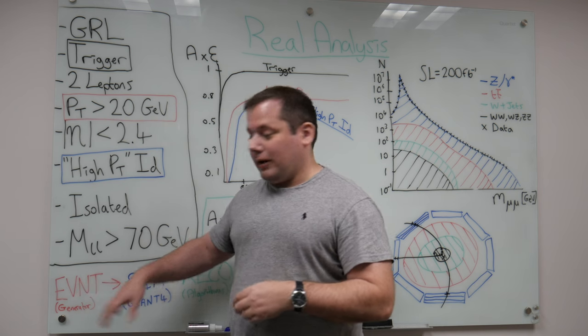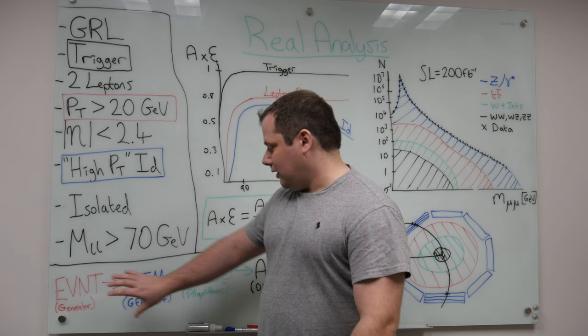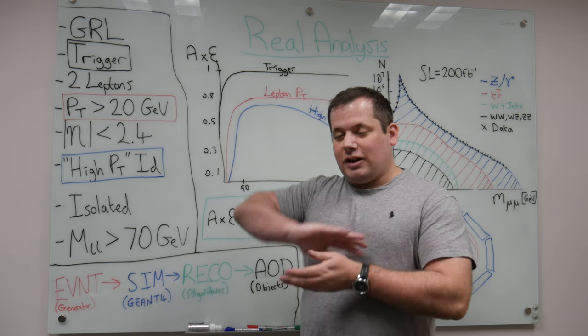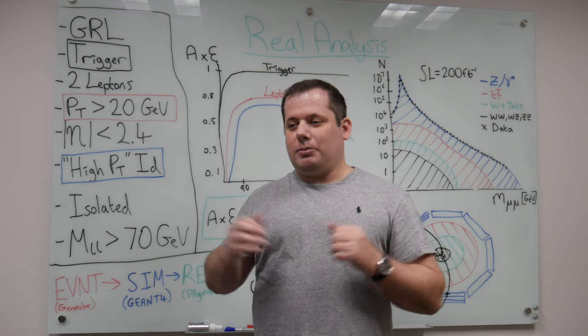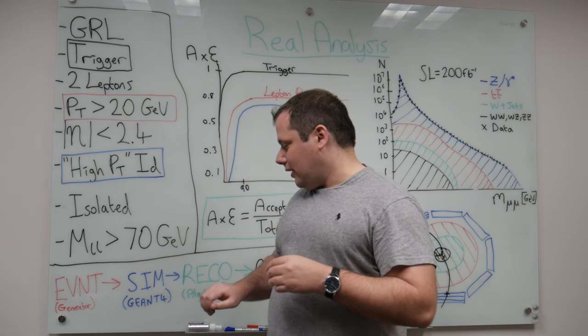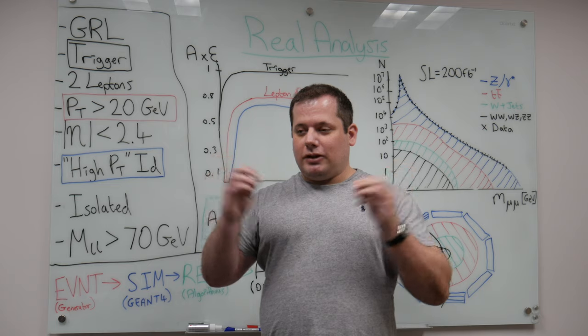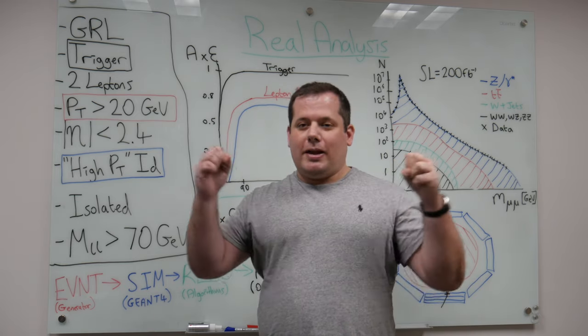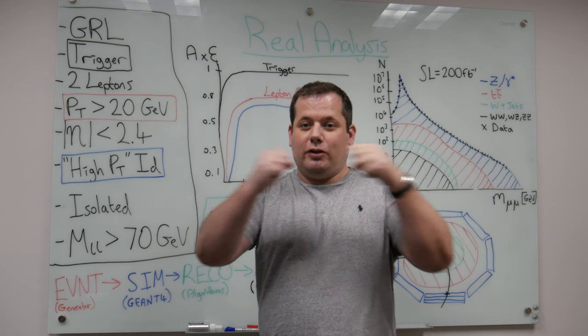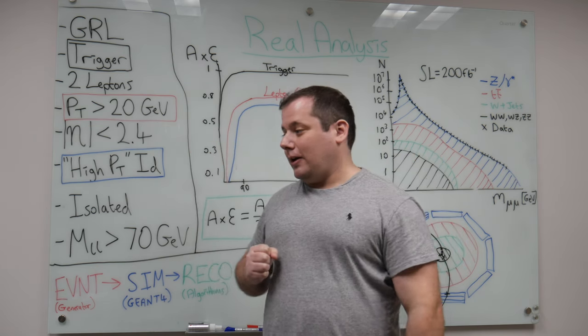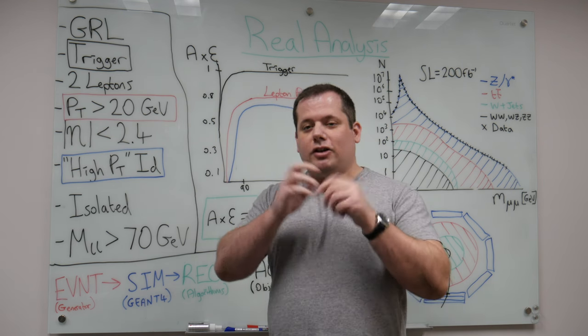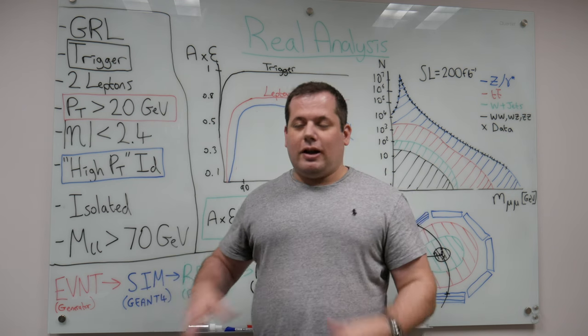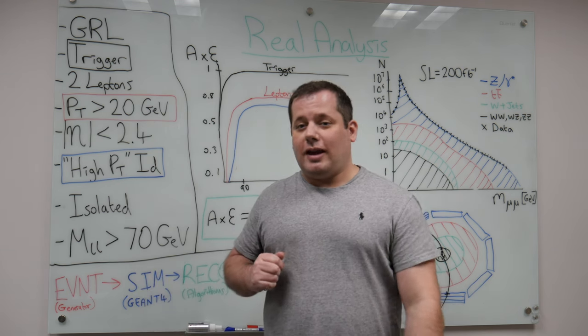What we have to do with the simulation is we start with the generator to generate all of the different standard model processes, and even beyond the standard model processes that we know about. Then what we have to do, because that's just generating the PP collisions, creating the particle, and then its decay products. What we then have to do to actually see what the detector would see is, we go to the next step in the chain called simulation, which essentially wraps the real detector, or our best description of the detector, around that underlying event.